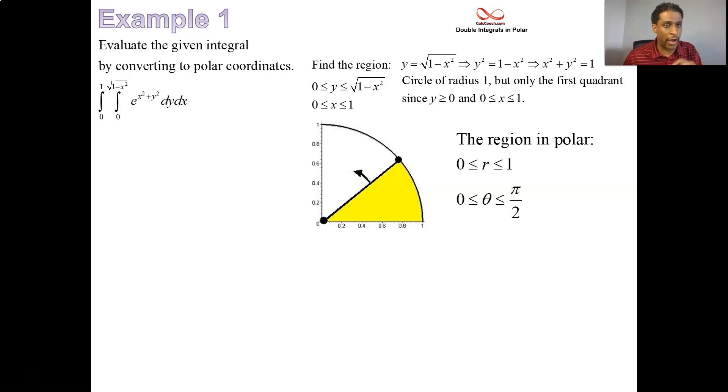Now you have to convert the inside as well. And as we had said earlier, e to the x squared plus y squared becomes e to the r squared. dy dx becomes r dr d theta. Don't forget the r. And so you're ready to go.